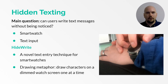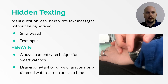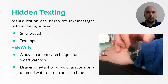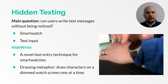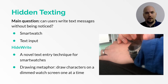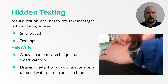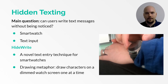Hide-Write is a novel text entry technique for smartwatches. It is based on a drawing metaphor, where users can draw characters on a dimmed watch screen one at a time. Instead of pulling out a smartphone to type or using a smartwatch with traditional techniques that require closely monitoring the screen, users can keep their watch out of sight and type without looking, or even hide the typing in plain sight by disguising it as idle fidgeting.